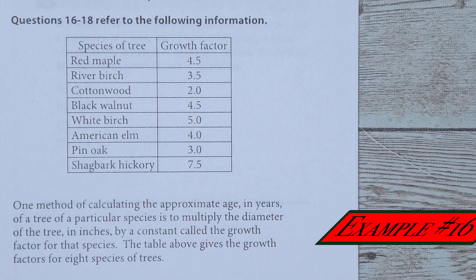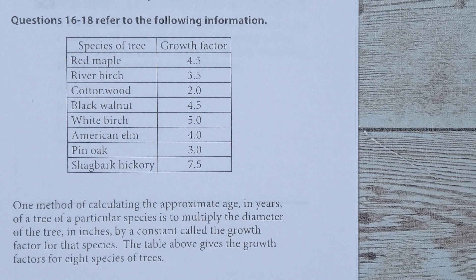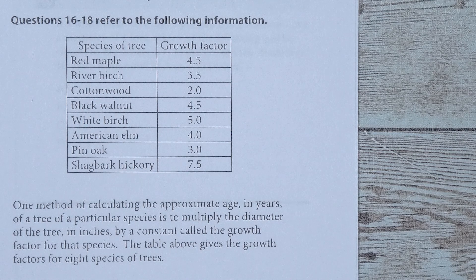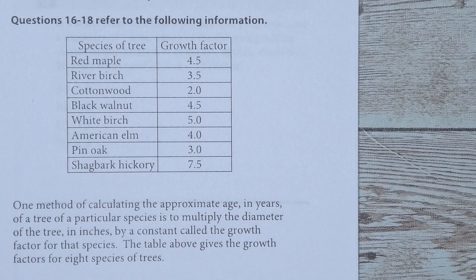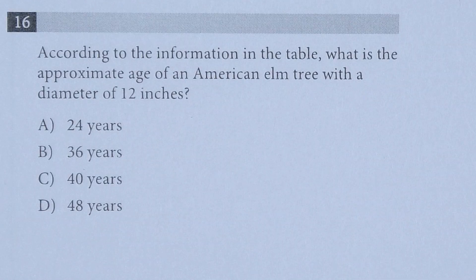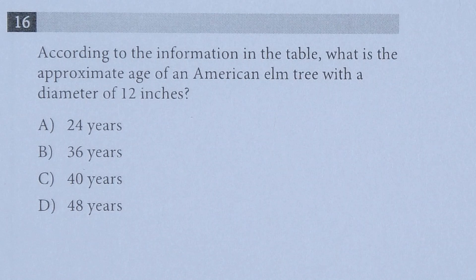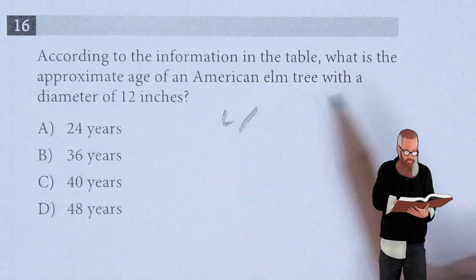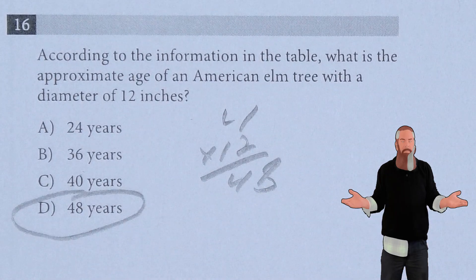Questions 16-18 refer to the following information. One method of calculating the approximate age in years of a tree is to multiply the diameter in inches by a constant called the growth factor for that species. The table gives the growth factor for eight species. According to the table, what is the approximate age of an American elm tree with a diameter of 12 inches? The American elm has a growth factor of 4. So multiplied by 12, we get 48, giving us D is the answer.